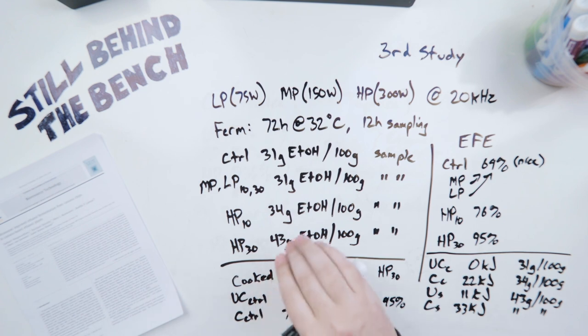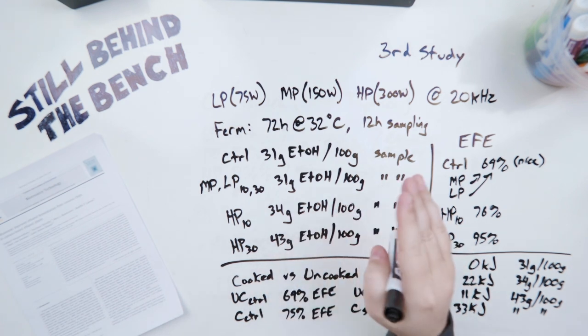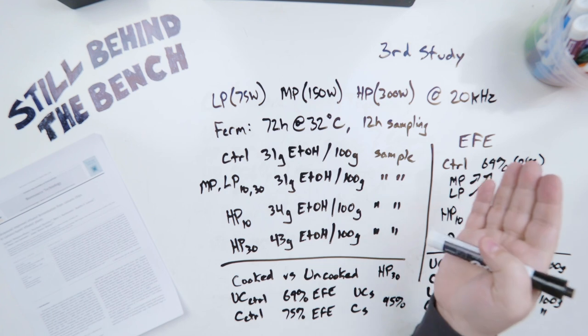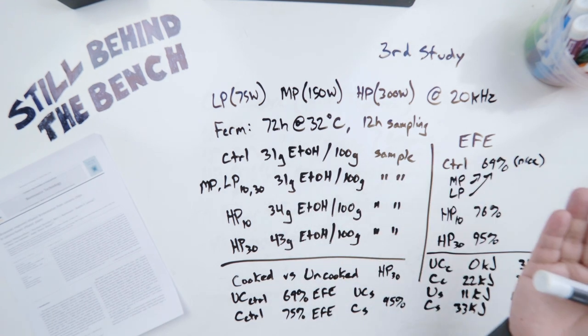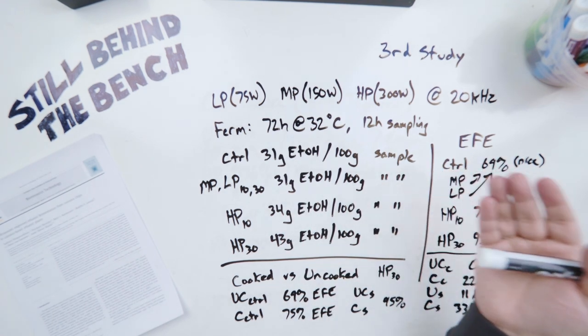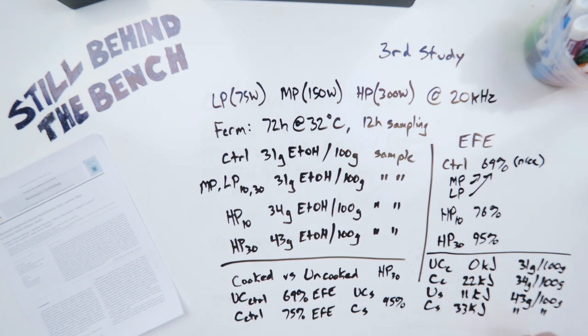Traditional mashing is typically referred to in the food science or biotechnology world as hydro cooking because you're essentially cooking it in water. I thought I'd also go into some energy, operational energy numbers. The uncooked control obviously used no energy, and they got 31 grams per 100 grams of sample. The cooked control used 22 kilojoules of energy. They got 34 grams per 100 grams sample. The uncooked but sonicated only used 11 kilojoules, and they got 43 grams per 100 grams. And then the cooked and sonicated used 33 kilojoules and got the same 43 grams per 100 grams.